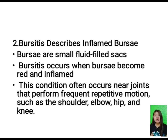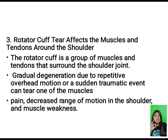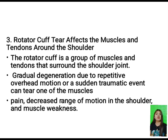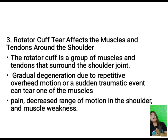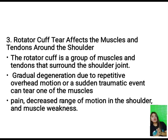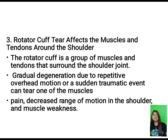The third is rotator cuff tear, which affects the muscles and tendons around the shoulder. The rotator cuff is a group of muscles and tendons surrounding the shoulder joint that keeps the top of the upper arm in the shoulder socket and helps it move in various directions. Gradual degeneration due to repetitive overhead motion or a sudden traumatic event can tear one of the rotator cuff muscles or tendons.